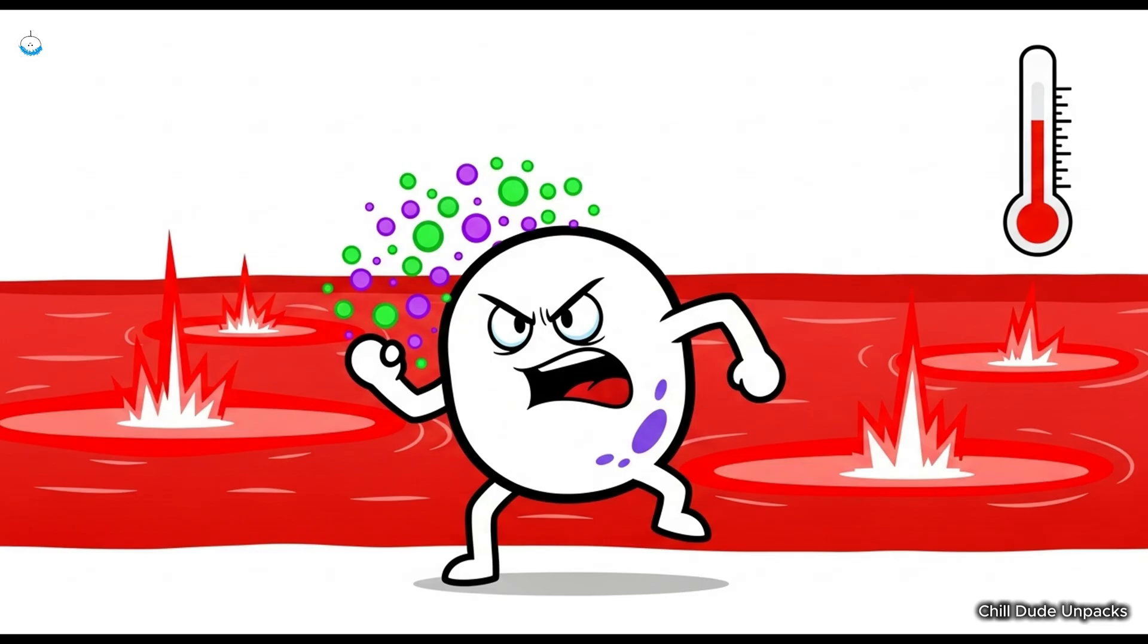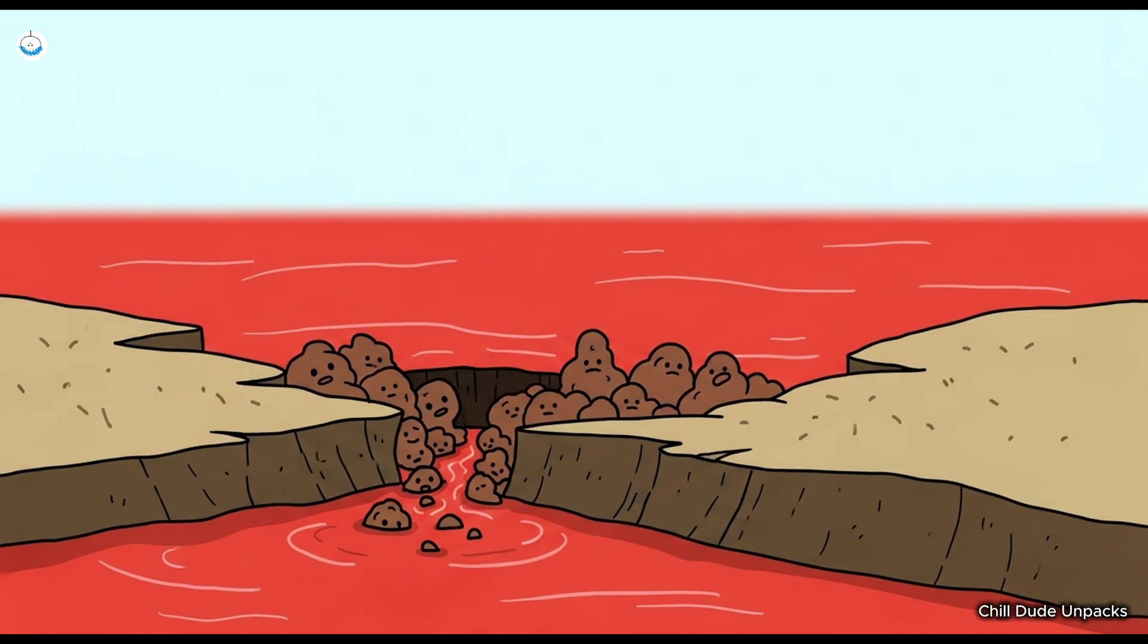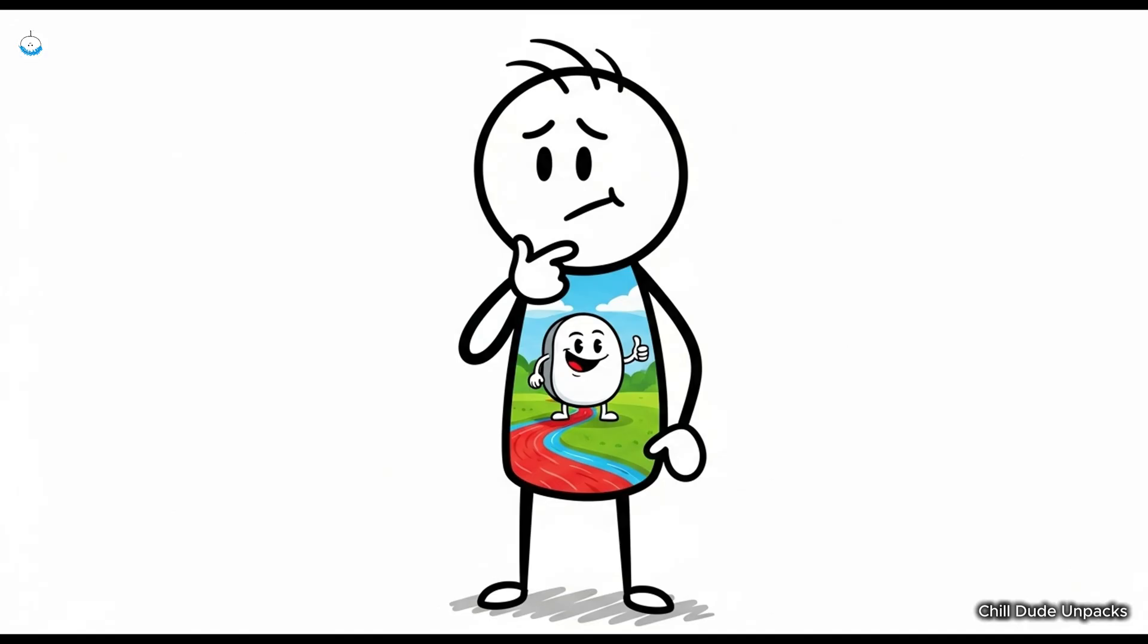But here's the bizarre part. Your blood doesn't always just stick to its own business. It can choose to form clots when it feels like things are getting too messy. Imagine a river suddenly deciding to dam itself up because it doesn't like what's coming downstream. So when you cut yourself, your blood decides, okay, let's put a stop to this flood. It's like a spontaneous roadblock popping up right when you need it. So next time you're feeling a little extra chaotic inside, just remember, it's not you. It's your blood being its own little anarchist trying to keep things in check.